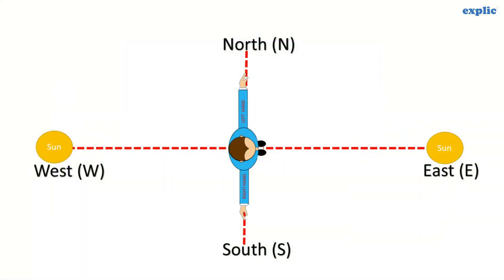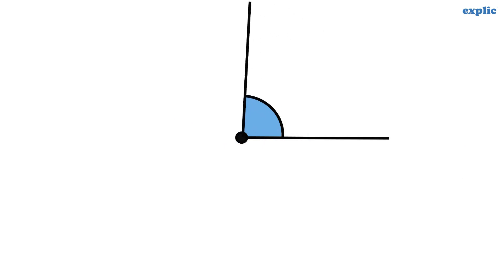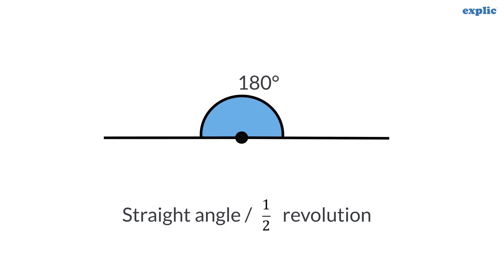If you are standing facing the east, just spin at your place anti-clockwise to face the west direction. The angle you traveled is called a straight angle. The measurement of a straight angle is 180 degrees. One straight angle is equal to two right angles. A straight angle can also be called a half or 1 by 2 revolution.